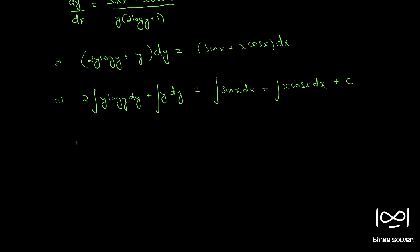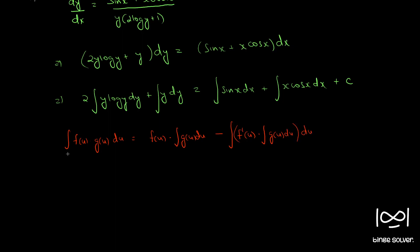For those who do not remember integration by parts, it states: the integral of f(u) · g(u) du equals the first function f(u) times the integral of the second function, minus the integral of [f'(u) times the integral of the second function] du. We choose the first and second functions appropriately so that the right-hand side is easily solvable.